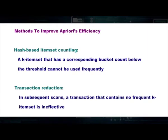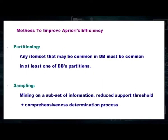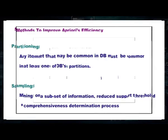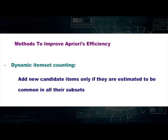Methods to improve Apriori's efficiency include: hash-based item set counting, where a k-item set whose corresponding bucket count is below the threshold is not frequent; transaction reduction, where transactions containing no frequent k-item set are removed from subsequent scans; partitioning, where any item set common in the database must be common in at least one partition; sampling, which mines on a subset of data with a reduced support threshold; and dynamic item set counting, where new candidate items are added only if they are estimated to be common across all their subsets.